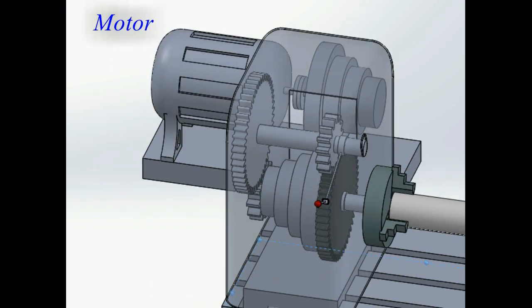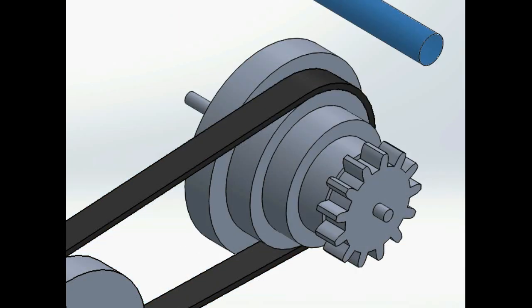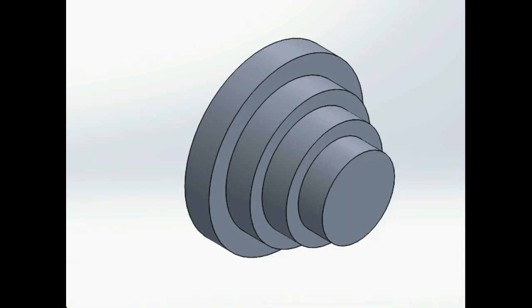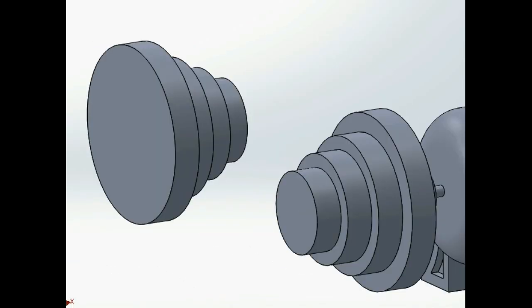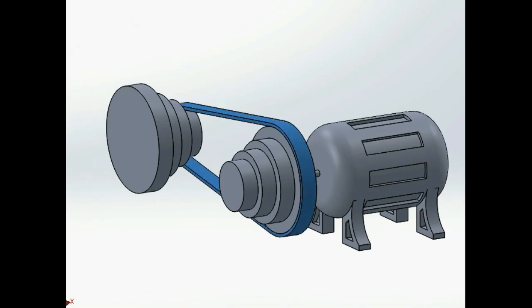A cone pulley is basically a stepped cone. In this arrangement there are two cone pulleys. The driving cone pulley is coupled directly to a motor while the other one is driven by a belt.